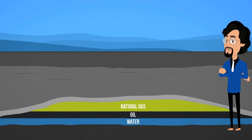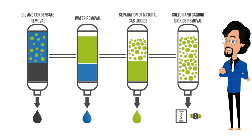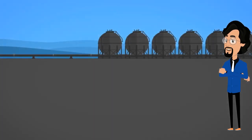Natural gas is sent through small pipelines called gathering lines to processing plants, which separate the various hydrocarbons and fluids from the pure natural gas to produce what is known as pipeline-quality dry natural gas. Processing involves four main processes to remove various impurities. Gas is then transported through pipelines called feeders to distribution centers or stored.